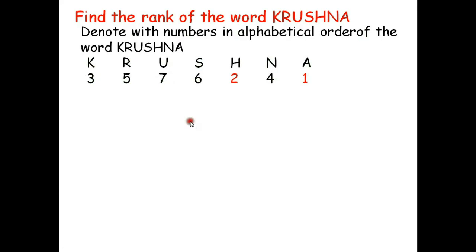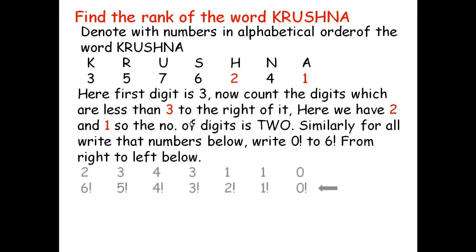Take the first letter of the word KRISHNA — here it is K, denoted by 3. Now count how many digits are less than 3 to the right of it. Here we have only 2 and 1, so we have 2 digits which are less than 3 to the right of 3. Write down that number: 2.